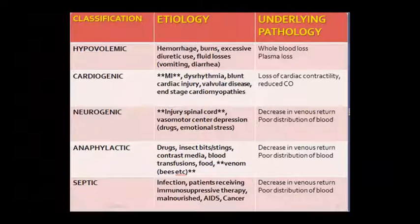Neurogenic shock mein venous return kum ho jata hai aur blood distribution bhi poor ho jata hai. Aisa spinal cord injuries mein dikhai deta hai, vasomotor center depression ki wajah se - drug ya emotional stress ki wajah se agar vasomotor center depressed ho jaaye to dikhai deta hai. Anaphylactic - jisme venous return kum ho jaaye ya blood ka distribution poor ho jaaye. Yeh teeno ke andar same condition hai - venous return kum hona aur poor distribution hona - yeh neurogenic, anaphylactic aur septic shock ki underlying pathology hai.